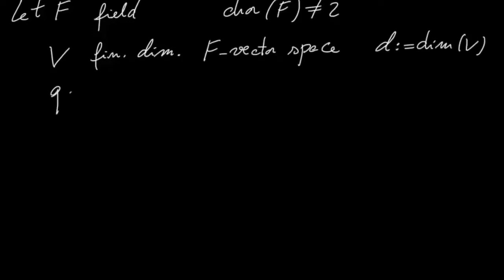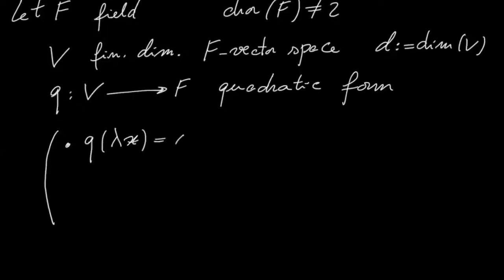And suppose that it comes equipped with a quadratic form. So let me recall, that means that this map has two properties. It's not linear, instead it is quadratic in this sense.